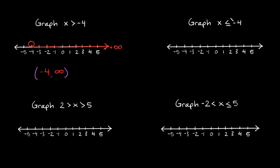This one says graph x is less than or equal to negative 4. I see the equal to sign, so immediately I know I'm going to use a closed circle at negative 4. And since x is smaller than negative 4, those numbers are in this direction towards negative infinity. In interval notation: negative infinity is on the left and negative 4 is on the right. A parenthesis always goes around the negative infinity sign, and since we used a closed circle, we use a bracket next to negative 4. So the answer is (-∞, -4].